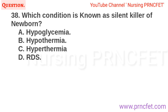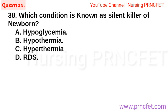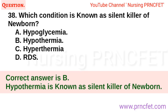Question 38: Which condition is known as the silent killer of newborns? A. Hyperglycemia. B. Hypothermia. C. Hypothermia. D. RDS. Correct answer is B. Hypothermia is known as the silent killer of newborns.